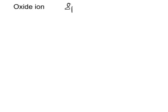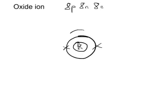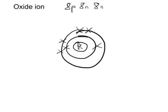Next, let's show how an oxide ion would be formed from an oxygen atom. Oxygen has got 8 protons, 8 neutrons, and 8 electrons. The 8 protons and 8 neutrons would be in the nucleus, surrounded by 8 electrons. Now, it's got an incomplete shell. If it were to gain 2 extra electrons, then it would have a full shell, and this is in fact what it does.